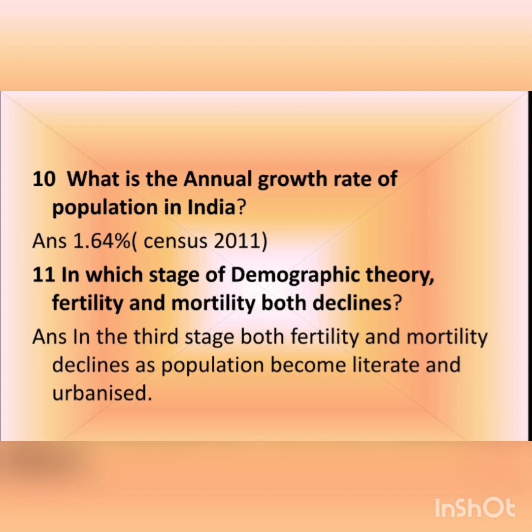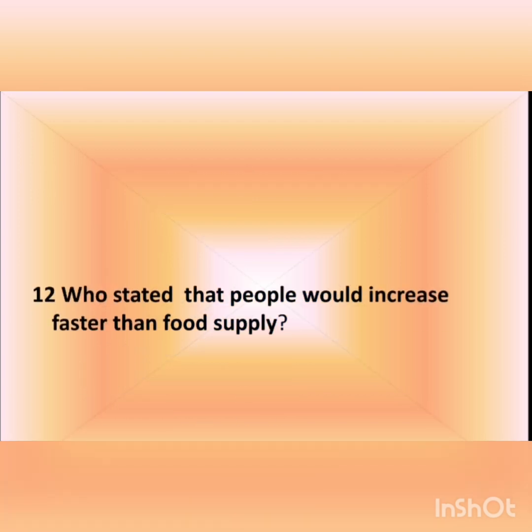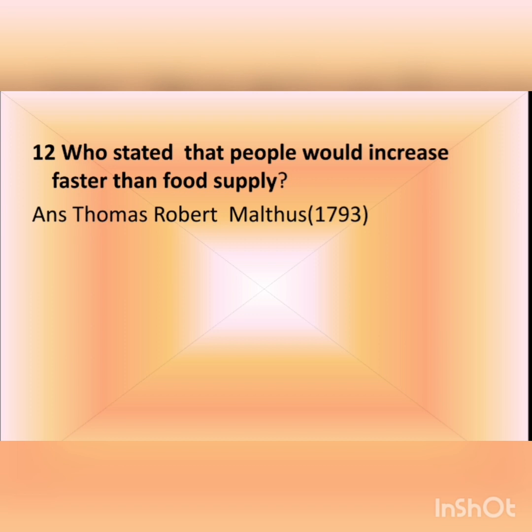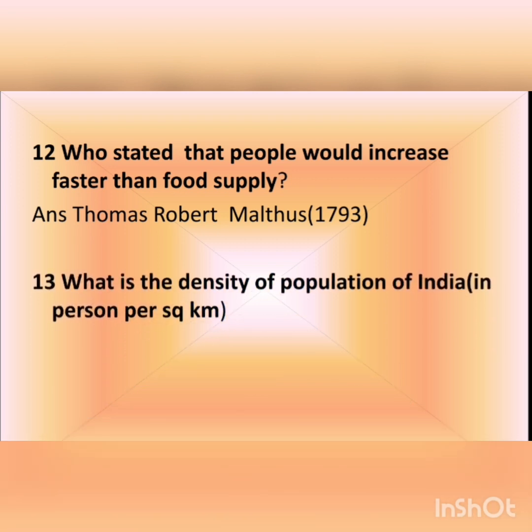The twelfth question is: who stated that people would increase faster than food supply? The answer is Thomas Robert Malthus (1793). He believed that through preventive checks and positive checks, population would be controlled to balance the food supply with the population level. He is also known for his theory on population growth.